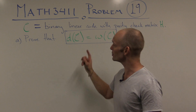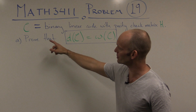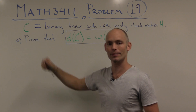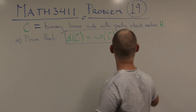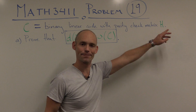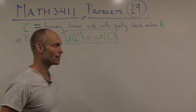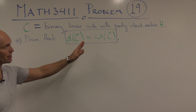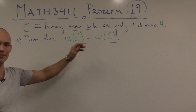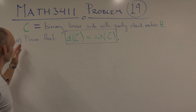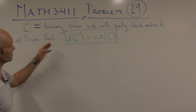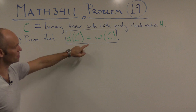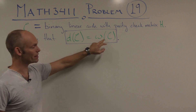This problem is about a binary linear code C that's given by a parity check matrix H. In the first part of this problem, we don't really care about H. We have to prove that the minimal distance in C is equal to the minimal weight in C.